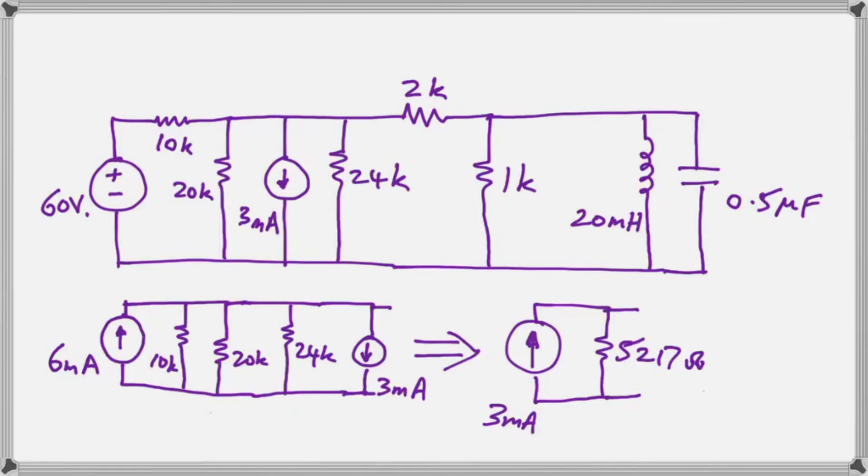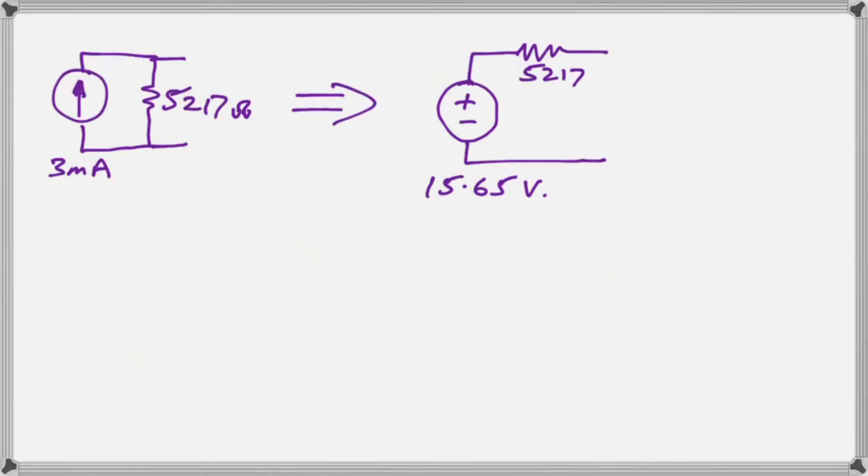So we transition now to a new board and the next thing we want to do is to turn that into its Thevenin equivalent by making it a voltage source with the same value of resistor via source transformation.